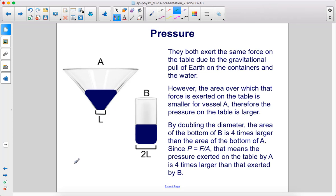They both exert the same force on the table due to the gravitational pull of Earth on the containers and the water. However, the area over which that force is exerted on the table is smaller for vessel A. Therefore, the pressure on the table is larger.